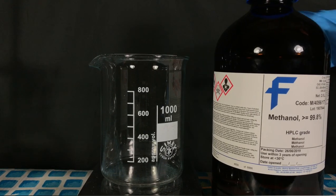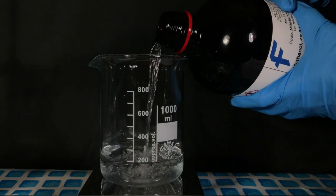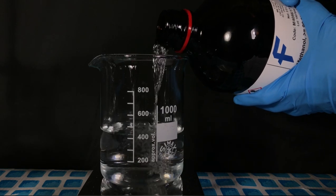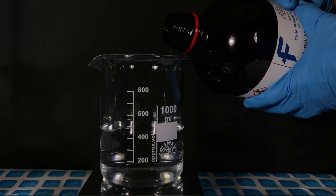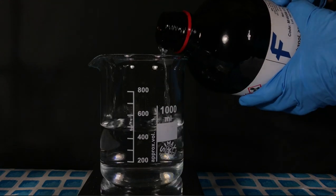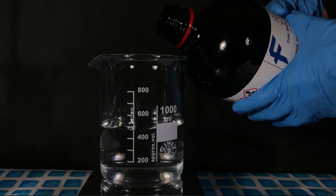Measuring out the formic acid using a small measuring cylinder posed an enormous burden. Because I am too lazy to repeat this process, the methanol was weighed out. 485.5 ml of methanol are approximately equivalent to 384.5 grams.